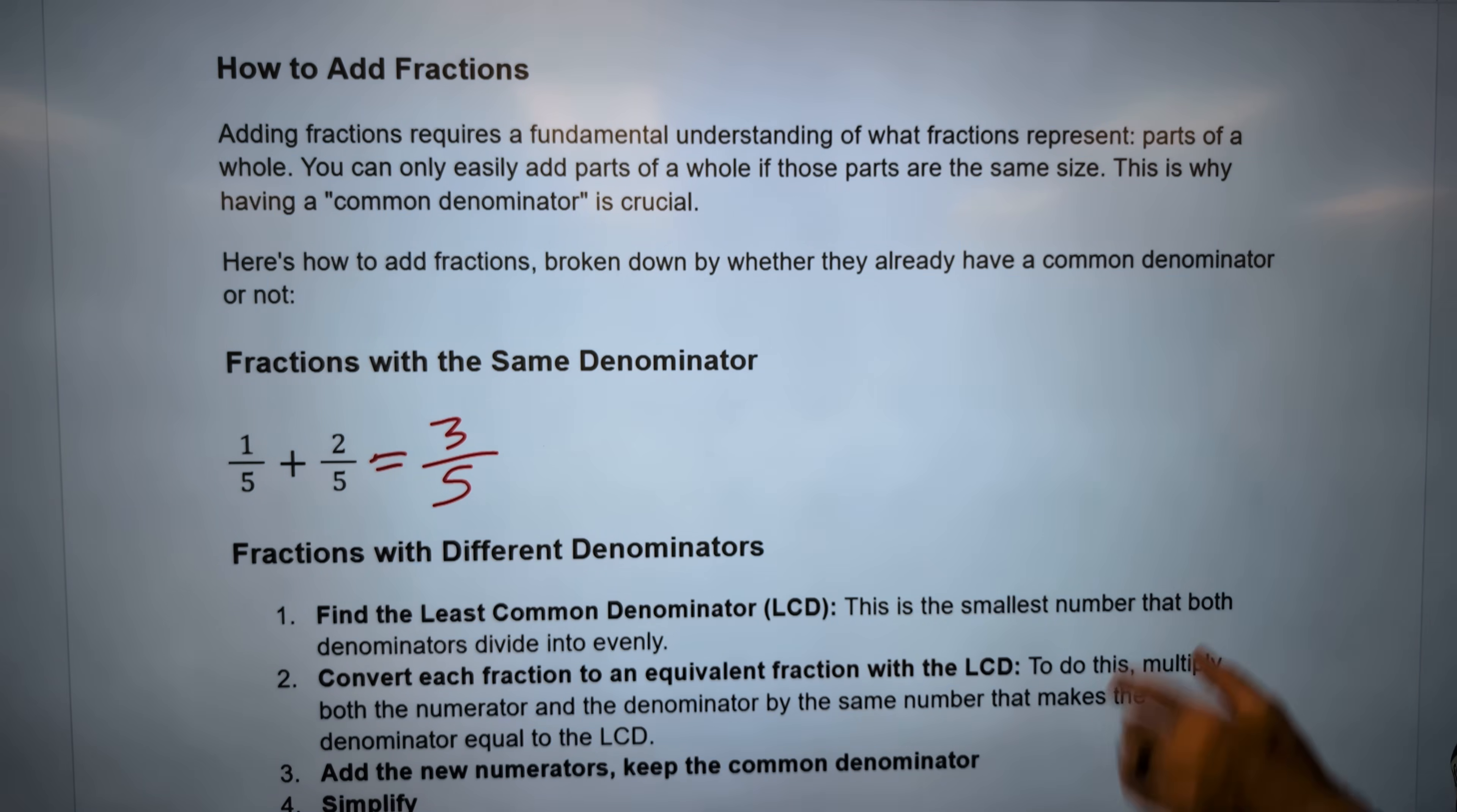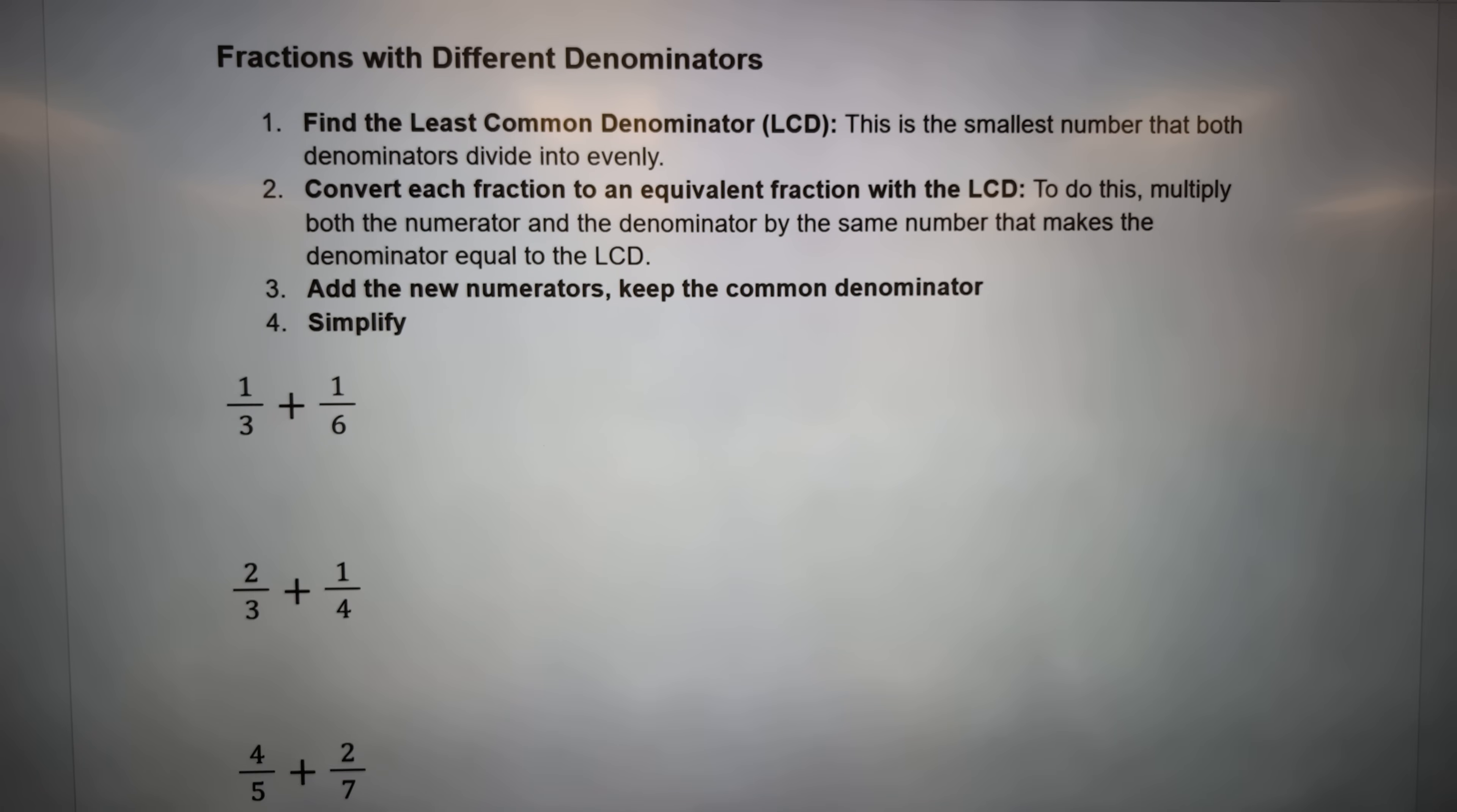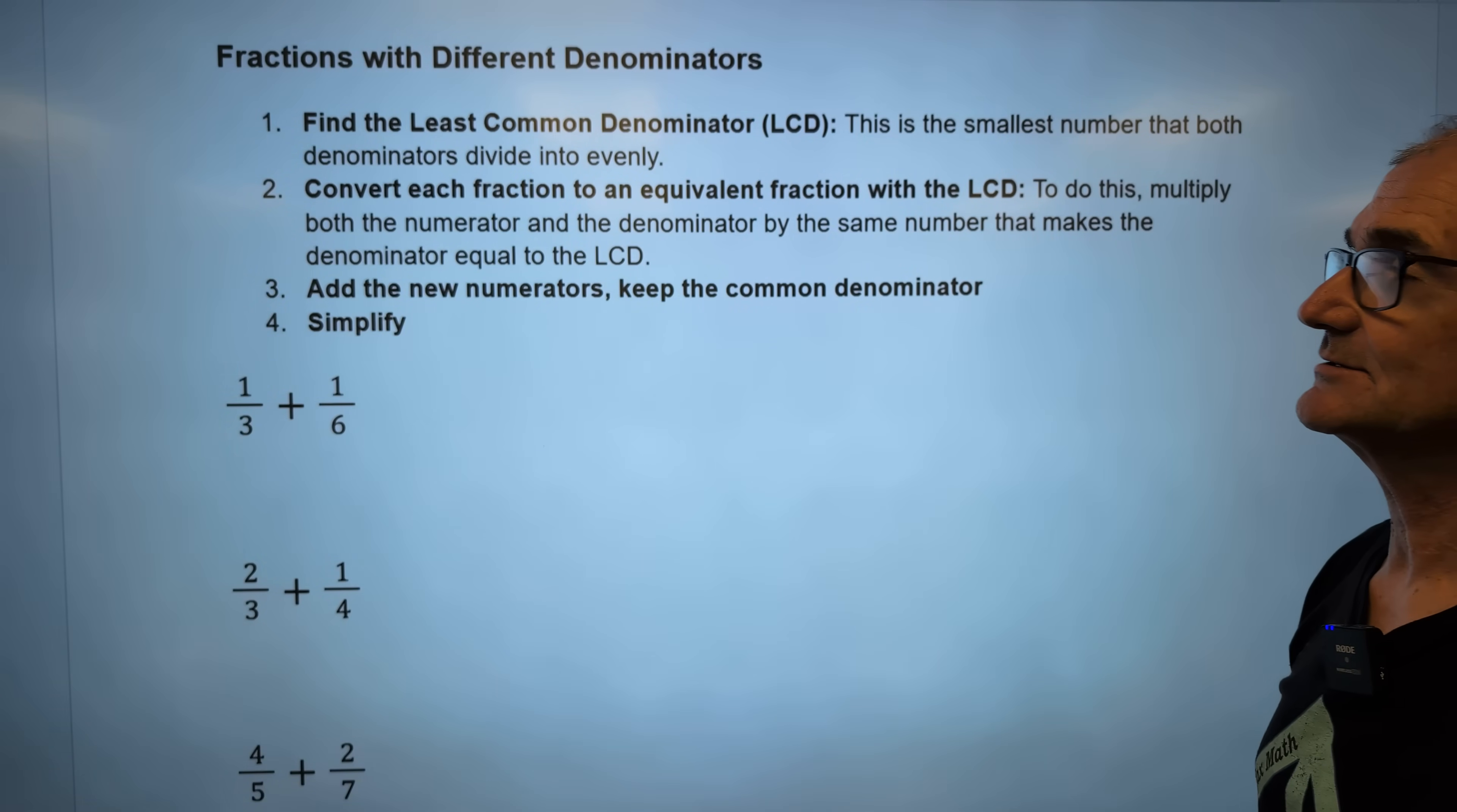However, usually the denominators are not the same. So fractions with different denominators, now what you have to do is find the least common denominator (LCD). This is the smallest number that both denominators divide into evenly.